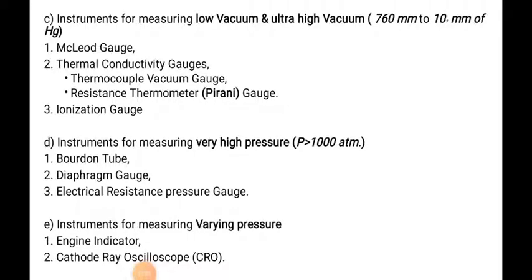For measuring low vacuum and ultra-high vacuum — 60 mm to 10 mm of mercury — the McLeod gauge is used; we will study McLeod gauge in detail. In thermal conductivity gauges there are two types: thermocouple vacuum gauge and resistance thermometer gauge (Pirani gauge). The third type is the ionization gauge.